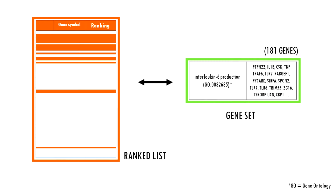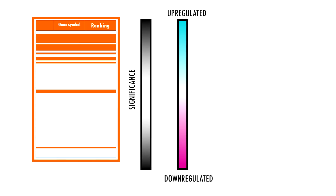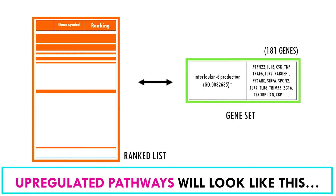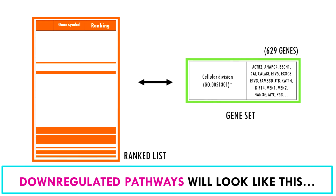Now let's take the gene set involved in interleukin-6 production — there are 181 genes involved in IL-6 production. Most genes involved in IL-6 production are found at the top of the list, since they were up-regulated in our dataset. Remember, up-regulated significant genes are at the top, so up-regulated pathways will have most of their genes towards the top. The opposite happens for down-regulated pathways — for example, genes involved in cellular division, which we found to be down-regulated in alcoholic liver versus healthy cells, will mostly be at the bottom.